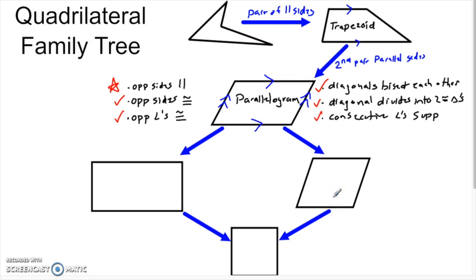I'm going to stop this video now — that'll be part one. In part two, I'll come back and talk about the rest of the quadrilateral family tree, and do some examples with algebra, particularly for a rhombus.